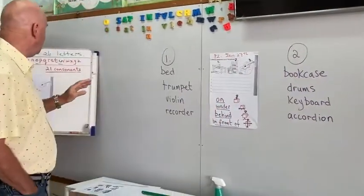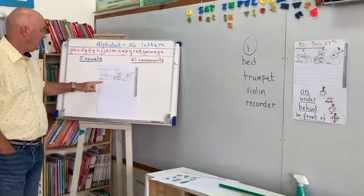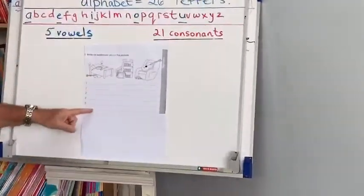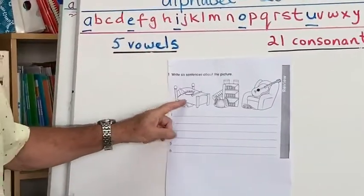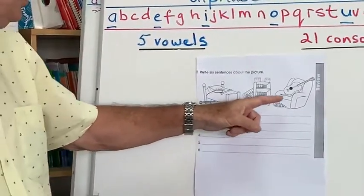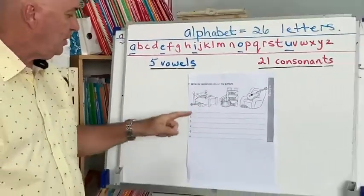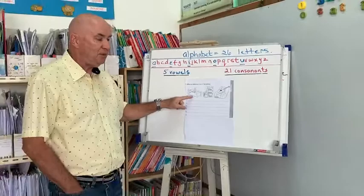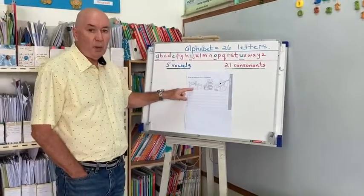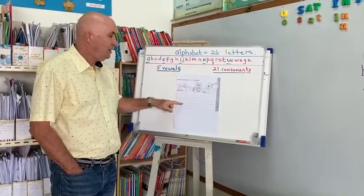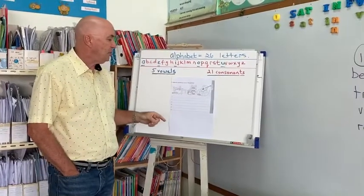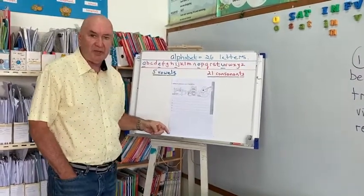So, your little job is just to give me six sentences here. Maybe two, two and two. Up to you. But use the musical instrument and say where they are. Are they on, under, behind, or in front of? Okay, good luck.